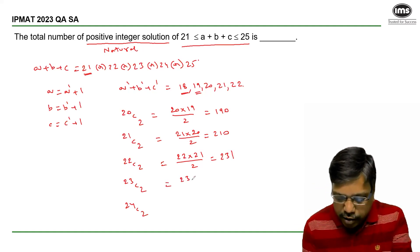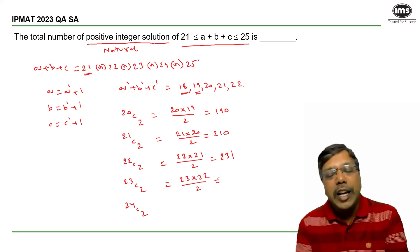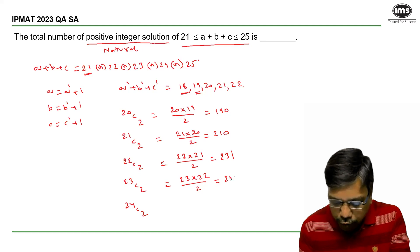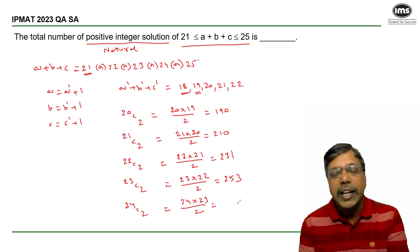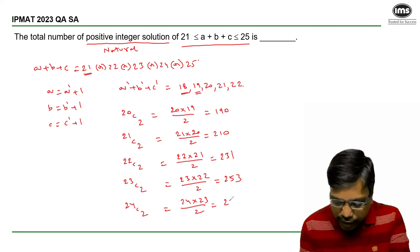Now, 23 × 22 / 2, which is 23 × 11 = 230 + 23 = 253. And 24 × 23 / 2, which is 12 × 23 = 230 + 46 = 276.